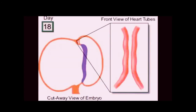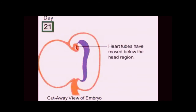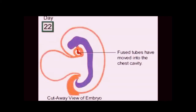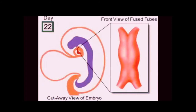Here's what the tubes look like from a front view. On day 21, we see that the primitive heart tubes have moved below the embryo's developing head region. And by day 22, the tubes have fused together and moved to the area that will eventually be our embryo's thoracic or chest cavity. It's also about this time that the heart begins to beat for the first time.